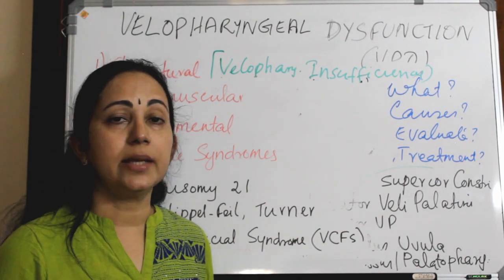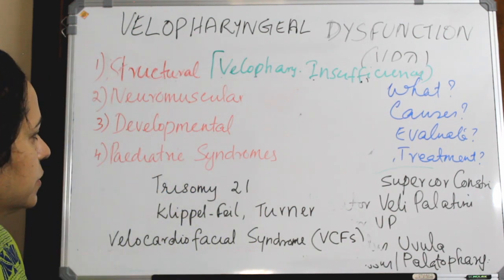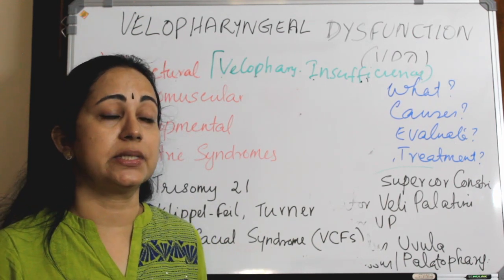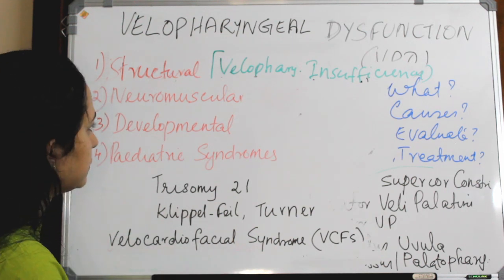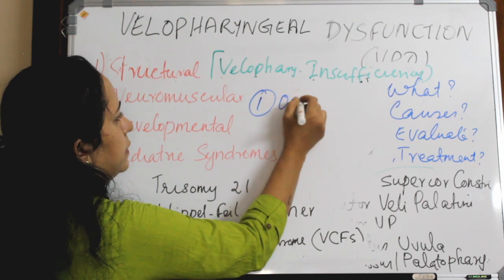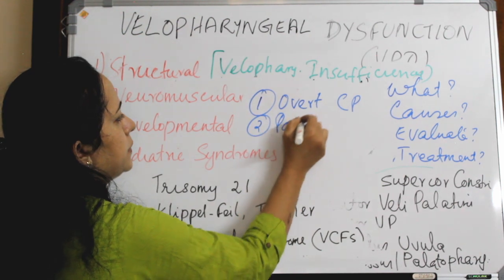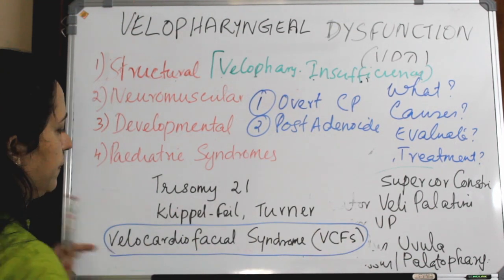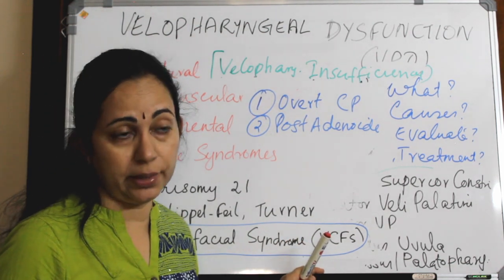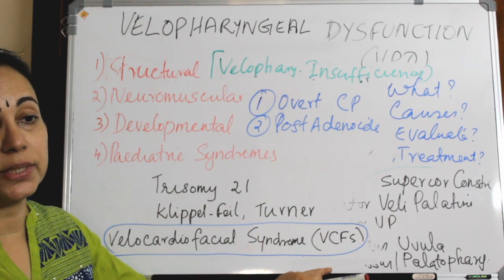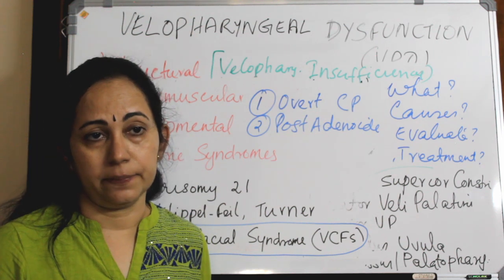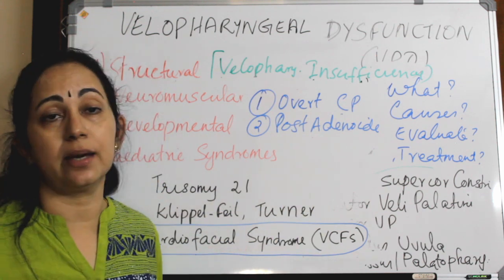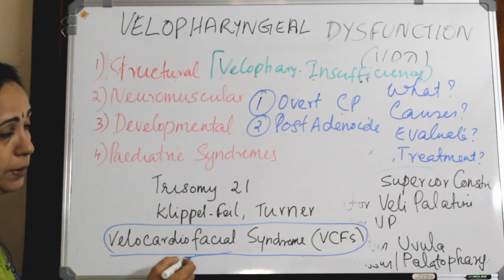The common cause of VPD, usually asked in MCQs, is overt cleft palate. The second most common cause is post-adenoidectomy scarring. Also remember that velo-cardio-facial syndrome, or VCFS, due to deletion of 22q11, is the commonest syndrome associated with VPD in non-cleft patients. So cleft palate and post-adenoidectomy scarring are the commonest causes overall, and VCFS is the commonest syndrome in non-cleft patients.